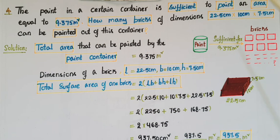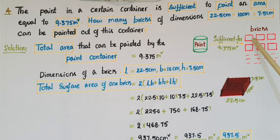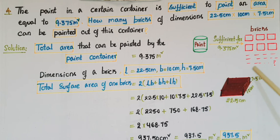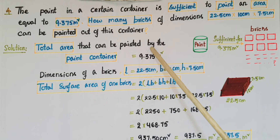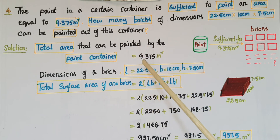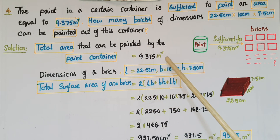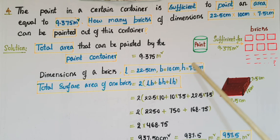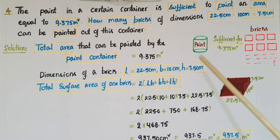So here the paint is sufficient for the area 9.375 meter square, and the brick dimensions are 22.5 cm × 10 cm × 7.5 cm. We have to find the total surface area of the brick first, then we can find the number of bricks. Total area that can be painted by the paint container is 9.375 meter square. Dimensions: l = 22.5 cm, b = 10 cm, h = 7.5 cm.